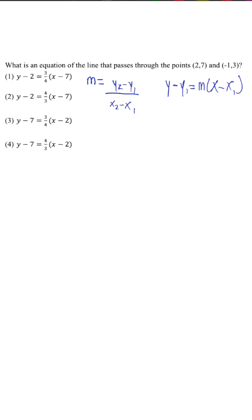Now, when we plug in the information for the slope, m is going to be equal to 7 minus 3 over 2 minus negative 1. So m is going to be equal to positive 4 over 3.